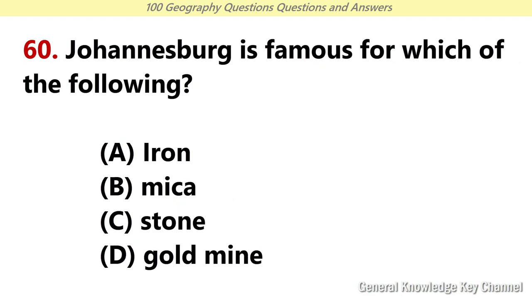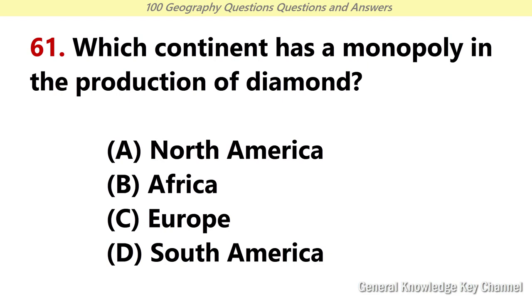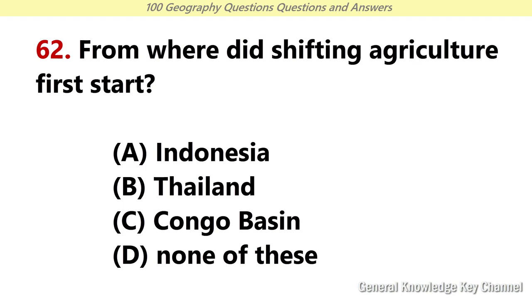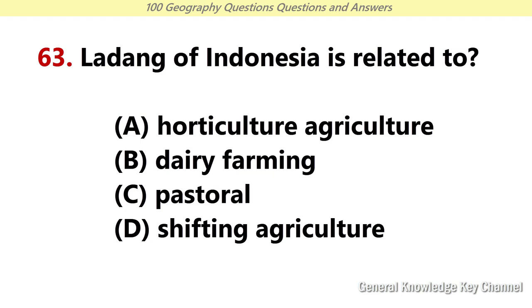Johannesburg is famous for which of the following? Answer D: Gold mine. Which continent has a monopoly in the production of diamond? Answer B: Africa. From where did shifting agriculture first start? Answer B: Thailand. Ladang of Indonesia is related to? Answer D: Shifting agriculture.